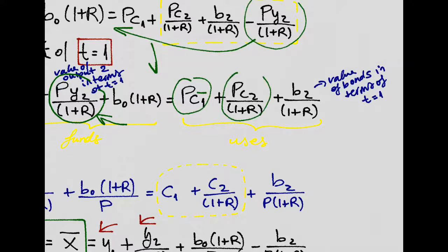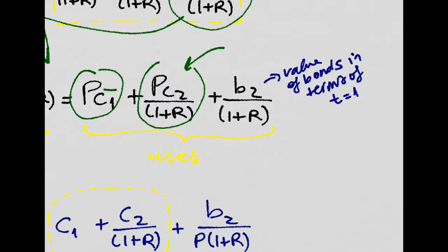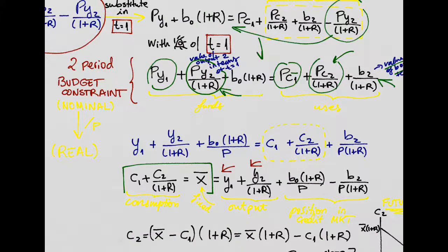You're discounting it. You're bringing it to the present period. And now here's the value of bonds in terms of T1. To get this new two period budget constraint in real terms, we just have to divide it all by P.